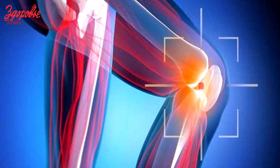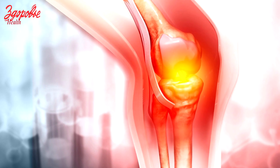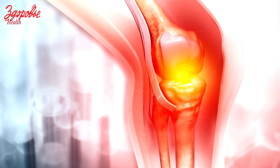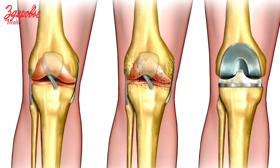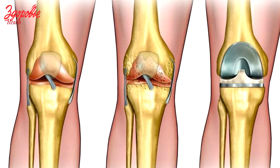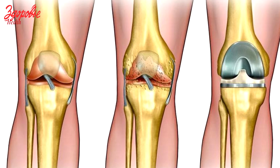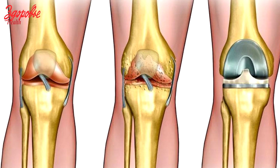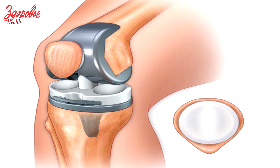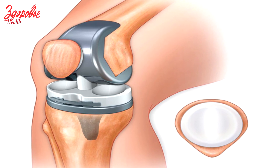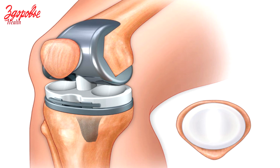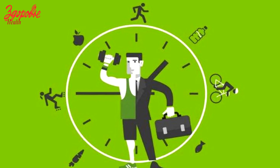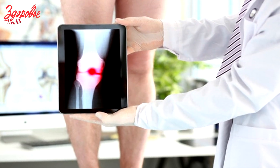Another treatment option for minor cartilage damage is micro-fracturing. In this procedure, the doctor, through a tiny access, injures the bone lying under the cartilage. This causes blood flow to the defect, and stem cells from the blood differentiate here into replacement fibrous cartilage. If cartilage damage has gone too far, prosthetics are considered. If the cartilage damage affects only one area of the knee joint, a partial prosthesis may be sufficient. In the case of progressive arthrosis of the knee joint, a total endoprosthesis is installed, which restores painlessness and mobility to the knee, and allows the patient to play sports, work, and lead an active lifestyle.